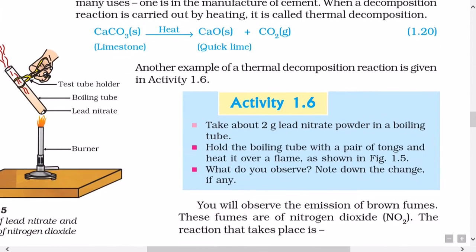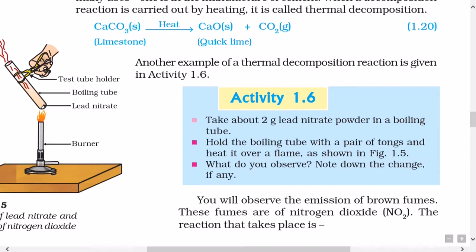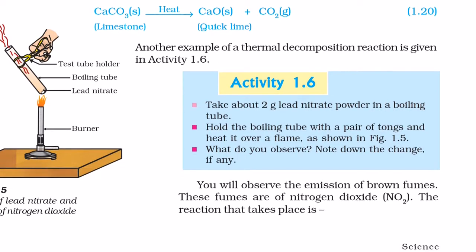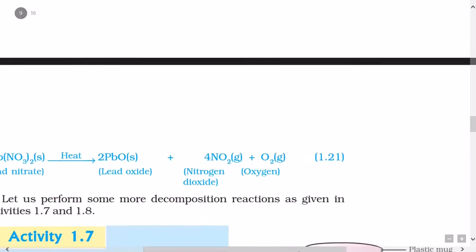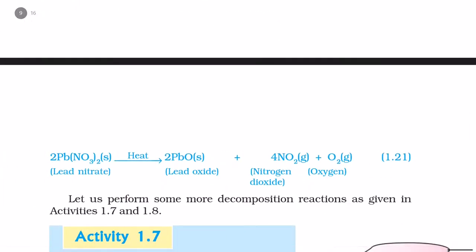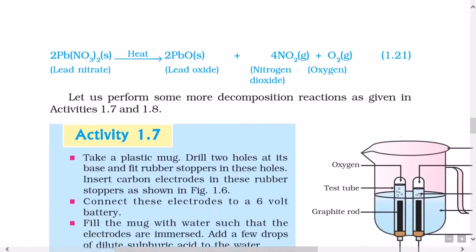Another example of thermal decomposition is Activity 1.6: Take about 2 g lead nitrate powder in a boiling tube. Hold the boiling tube with a pair of tongs and heat it over a flame as shown in figure 1.5. You will observe the emission of brown fumes. These fumes are of nitrogen dioxide (NO2). The reaction is: 2Pb(NO3)2 (solid, lead nitrate) when heated gives rise to 2PbO (solid, lead oxide) plus 4NO2 (gaseous, nitrogen dioxide) plus O2 (gaseous).